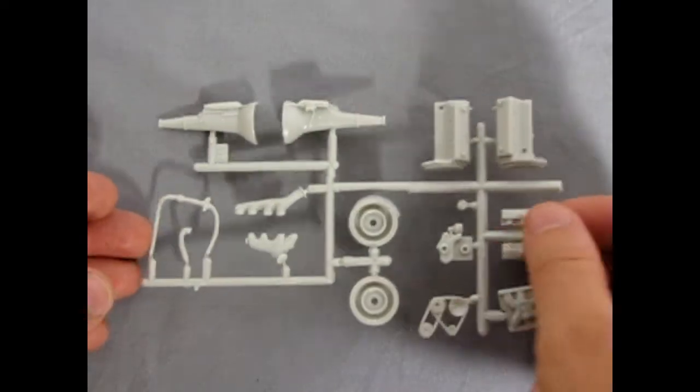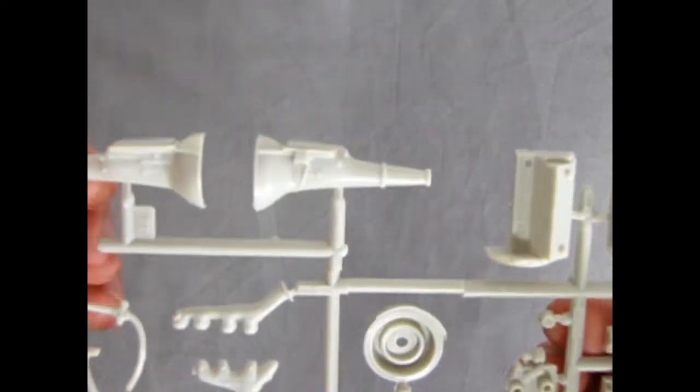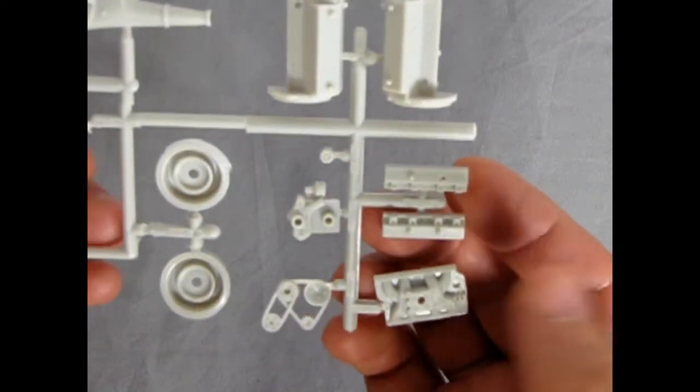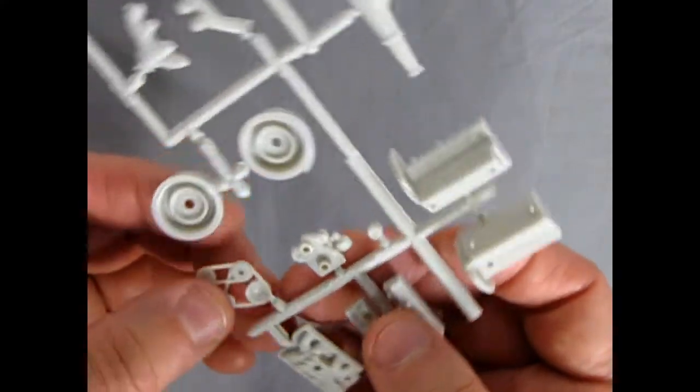And here we have our engine components. And as you can see, we've got a nice automatic transmission sitting there. Our engine block cylinder heads, intake manifold, fan belts, and front timing chain cover.